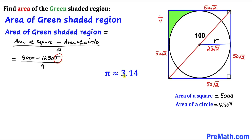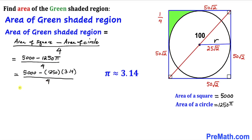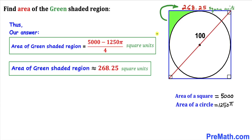We know that π ≈ 3.14, so plugging in: (5000 − 1250 × 3.14) / 4, which simplifies to approximately 268.25 square units. Thus, the area of the green shaded region is (5000 − 1250π) / 4 in terms of π, or approximately 268.25 square units in decimal form. Thanks for watching — please don't forget to subscribe for more exciting videos.